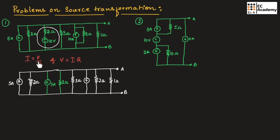So remember: while converting from voltage source to current source, you need to divide the voltage source value by the resistor. That is what we have done here, and the remaining values are written as they are.